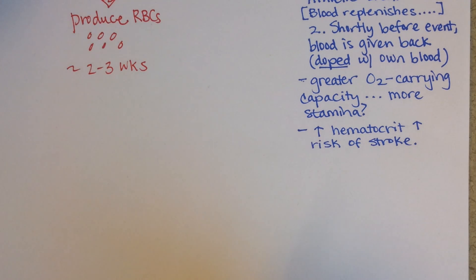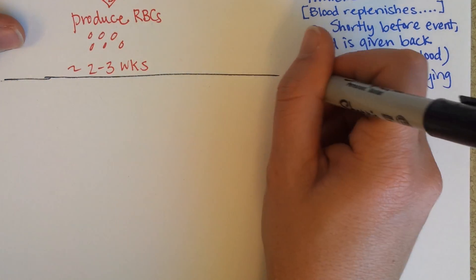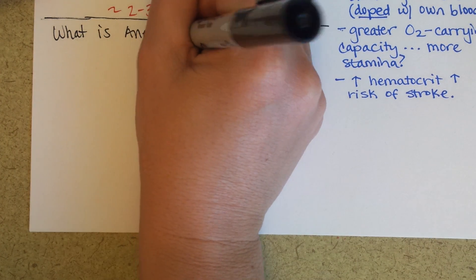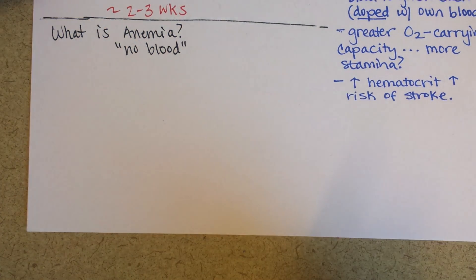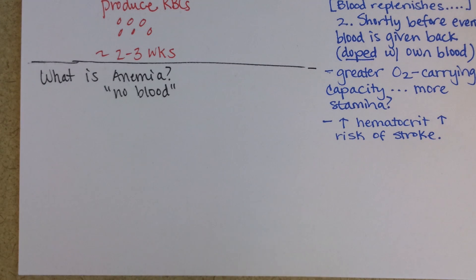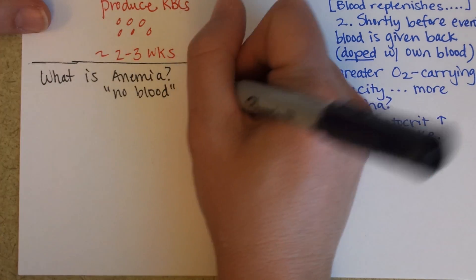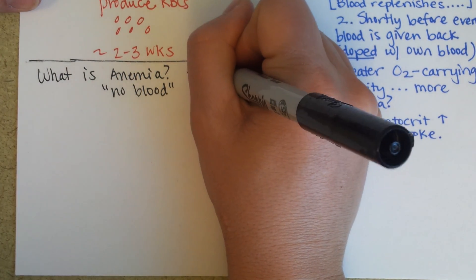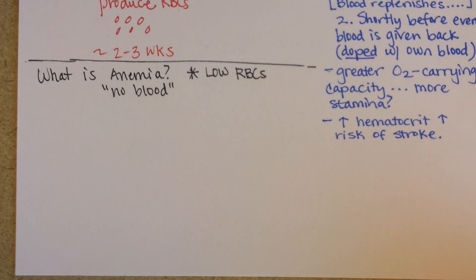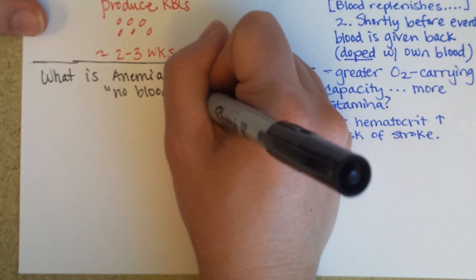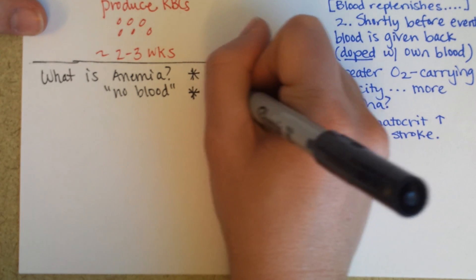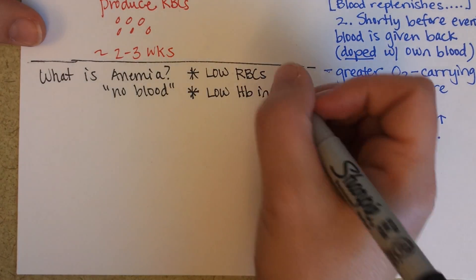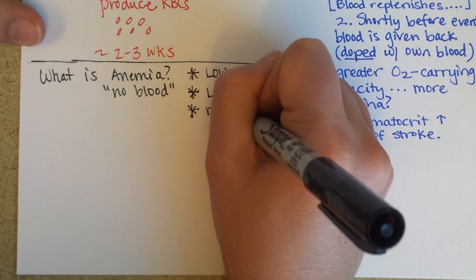What is anemia? The word simply means 'no blood,' which is a slight exaggeration. What it really means is not enough blood — more specifically, not enough red blood cells, or maybe enough red blood cells but not enough hemoglobin in them, or perhaps a mutated hemoglobin that doesn't work right.